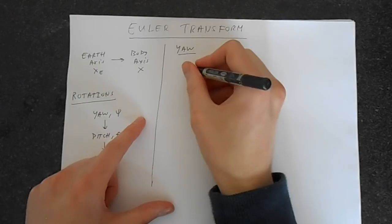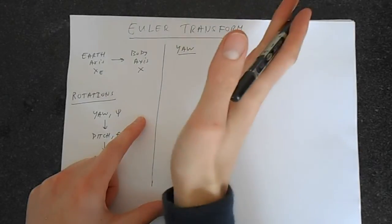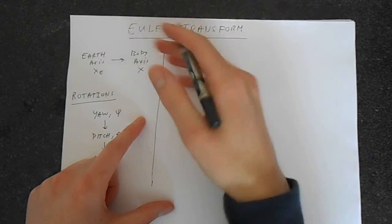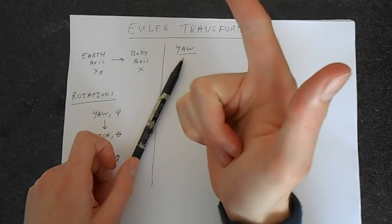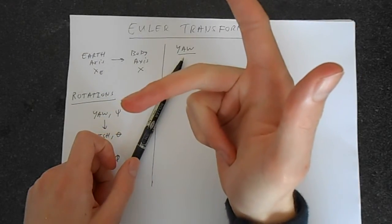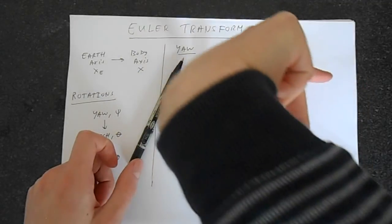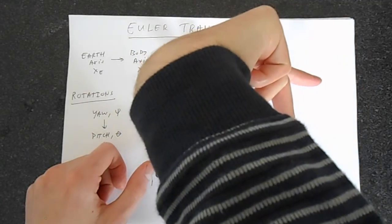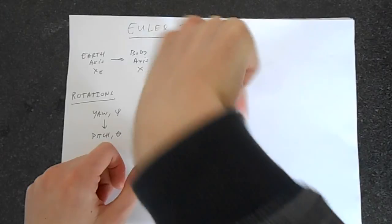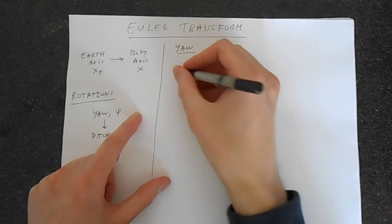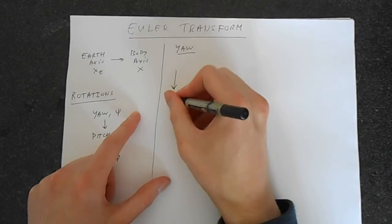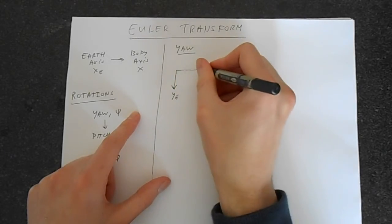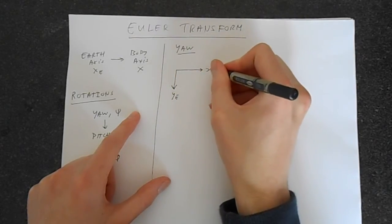Now yaw is in this sense so you're rotating about the Z axis. This is going to be your Z. This is going to be your X. This is going to be your Y. Let's put the Z going into the page. We've got X going that way, Y going that way. So we can do the transform. We've got YE coming down here and then we've got XE across here.